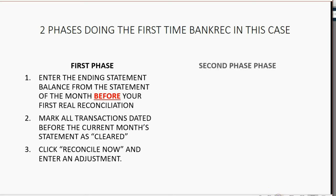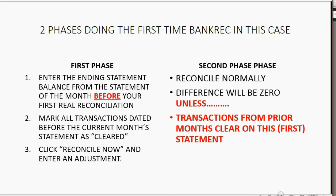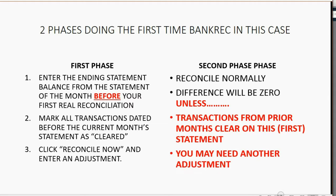In the second phase it's very simple — we reconcile normally, the way you learned in other videos. However, the difference should be zero unless there are transactions from a prior month that will clear on this current statement. If you have transactions from a prior month clearing on this first month's statement, you will have to enter another similar adjustment. Don't worry — your tax accountant will know what to do with those adjustments.